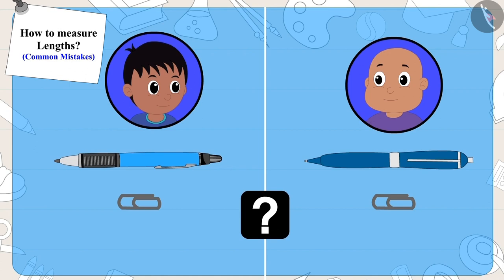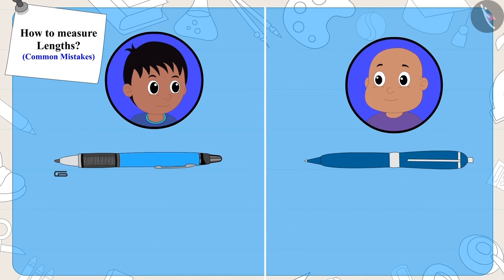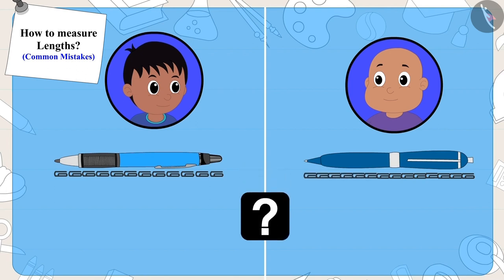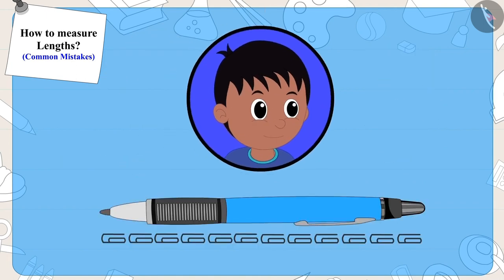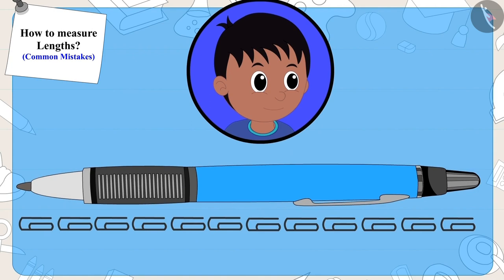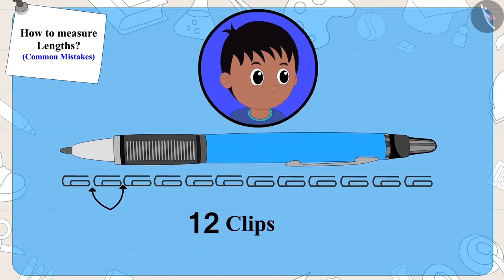Let's see how Raju and Bablu measured the length of their pens. Raju placed the clips in one way and Bablu in another. While measuring his pen, Raju left a lot of space between the clips — that is why only 12 clips fit in the length of Raju's pen.